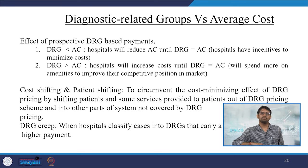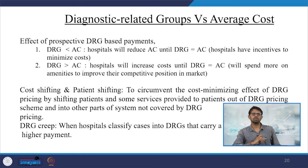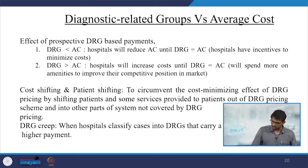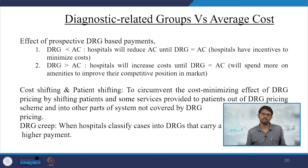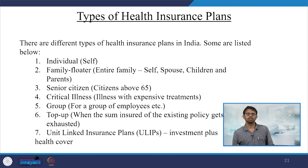Cost shifting and patient shifting are discussed in the context of DRG versus average cost. To circumvent the cost-minimizing effect of DRG pricing, hospitals shift patients and some services out of DRG pricing schemes into other parts of the system not covered by DRG pricing. DRG creep refers to when hospitals classify cases into DRGs that carry higher payments.